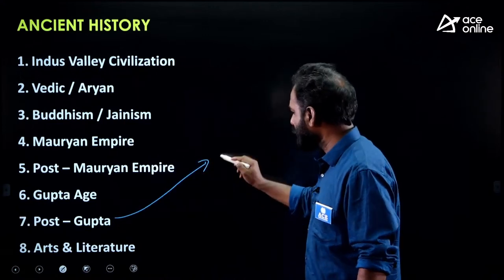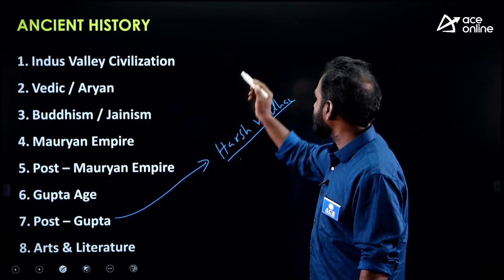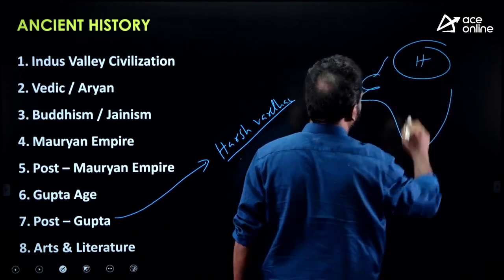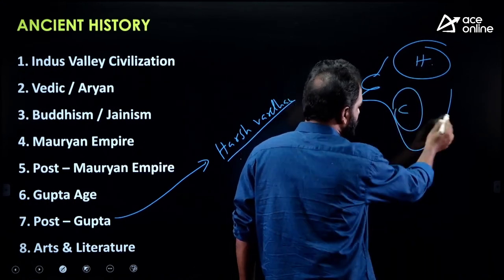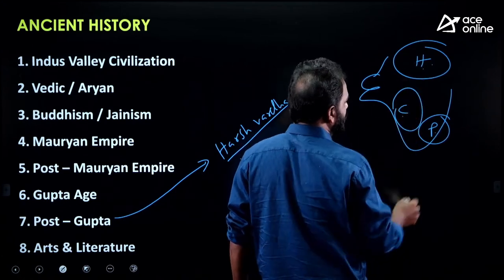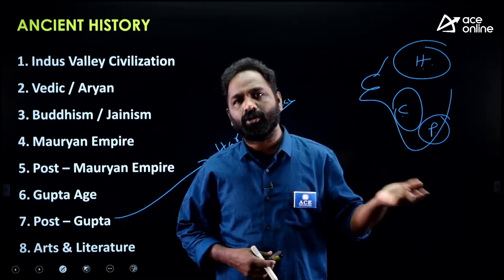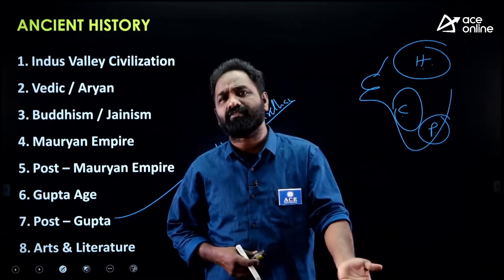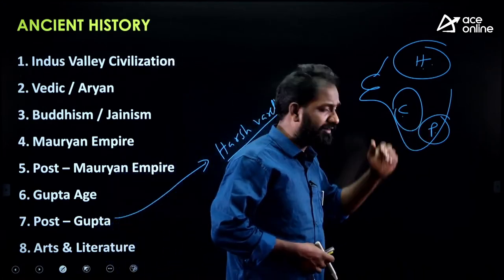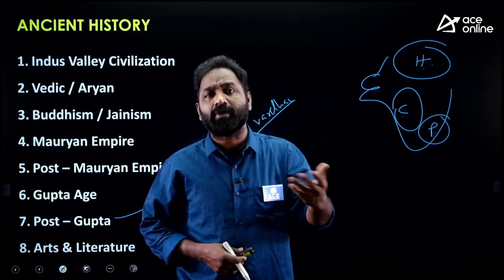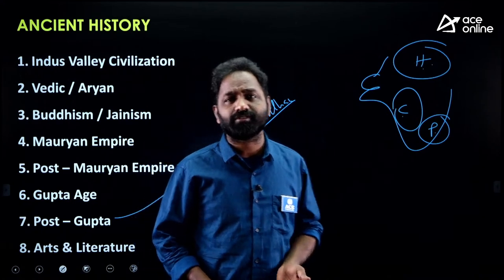In the Post-Gupta period, an important topic is Harsha Vardhan — the last Hindu ruler who ruled North India. Questions about Harsha Vardhan are repeatedly asked. Under his court was Bana Bhatta who wrote Harshacharita. For the Chalukyas, Pulakeshi I and Pulakeshi II are repeatedly asked. The Pallavas built Mahabalipuram (also called Mamallapuram) — a frequently asked question is who built Mahabalipuram.